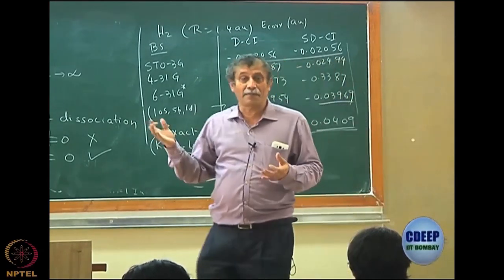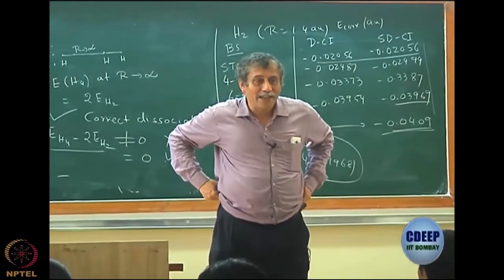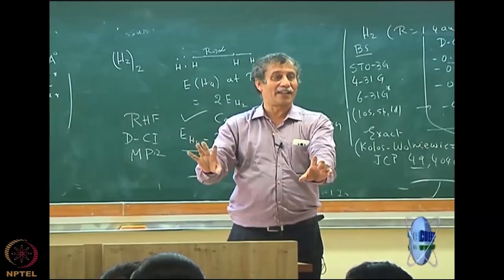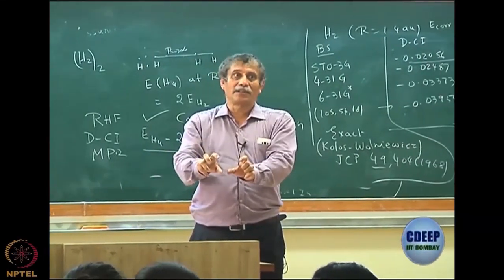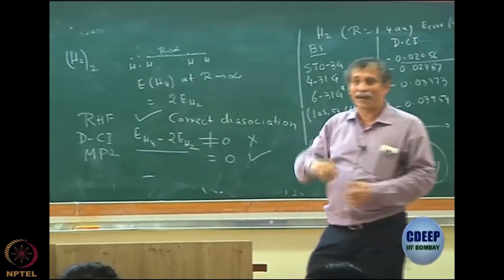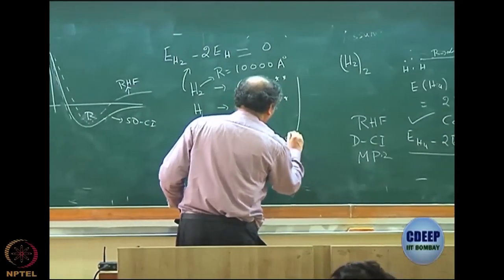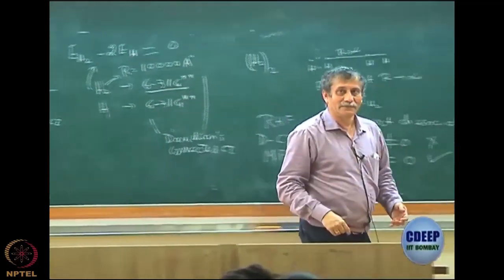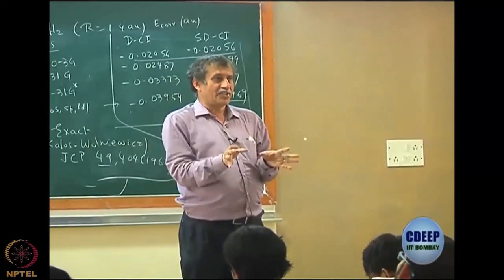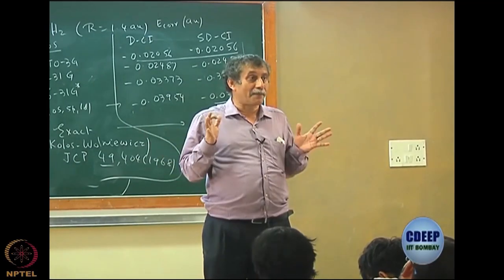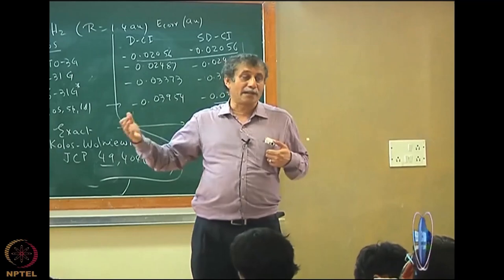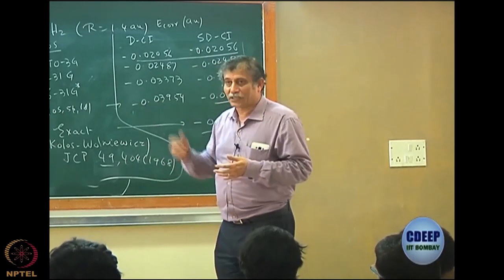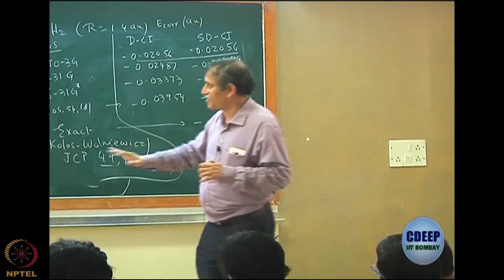Later, Ernie Davidson — whose Davidson algorithm for CI I mentioned — came up with corrections to DCI. He does a DCI and then adds an ad hoc correction which is no longer strictly CI. It is no longer variational, but he shows it correctly dissociates. This is called Davidson's corrected CI, and it is reasonably okay. But note: Davidson's corrected CI is no longer true CI. This problem was discovered more in the 1970s when Davidson was very active.